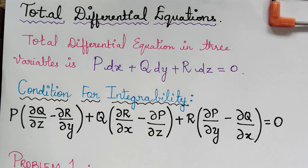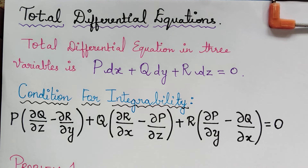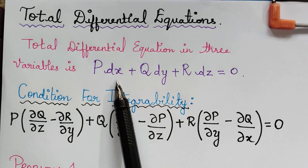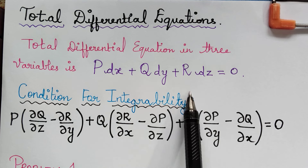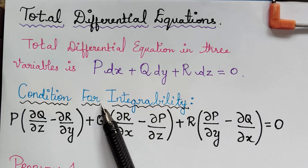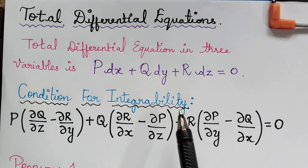Dear students, in this video lecture we are going to learn problems under the topic total differential equations. We are going to see the total differential equation in three variables, given by P dx plus Q dy plus R dz equals 0. In order to solve it, first we have to check the condition for integrability.